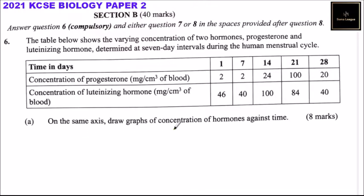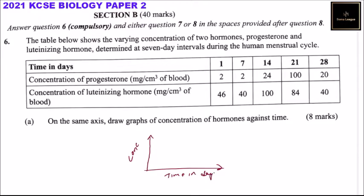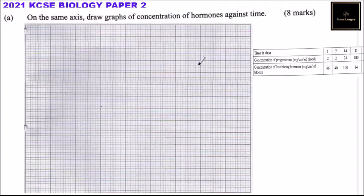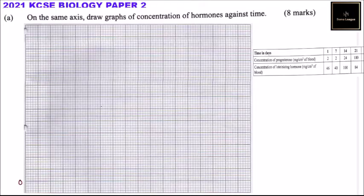On the same axis, draw graphs of concentration of hormones against time. The y-axis will represent concentration of both hormones, and the x-axis represents time in days. We will use the values from the table to draw the graph on the provided grid.